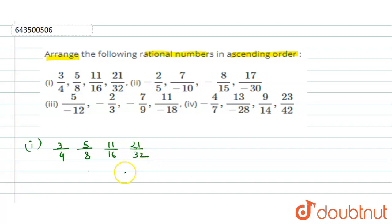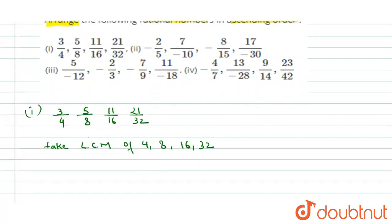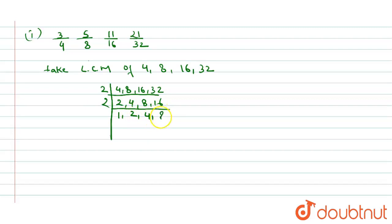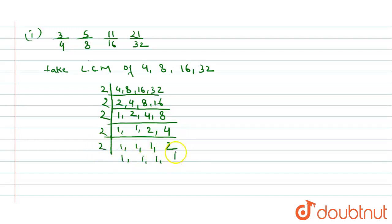The first thing we do is take the LCM of the denominators: 4, 8, 16, and 32. We divide repeatedly by 2 until all numbers reduce to 1. The LCM is 2 × 2 × 2 × 2 × 2 = 32. So our LCM is 32.